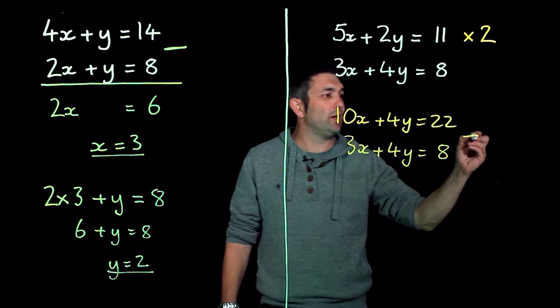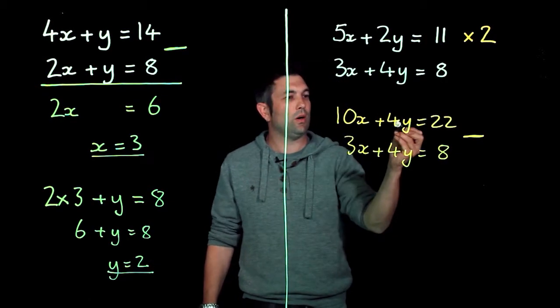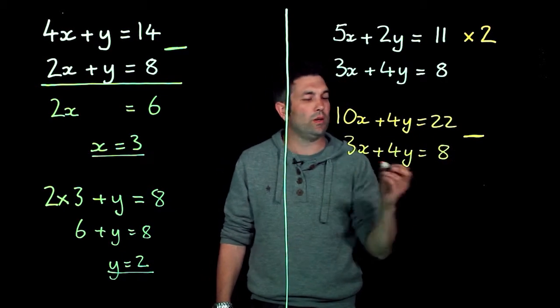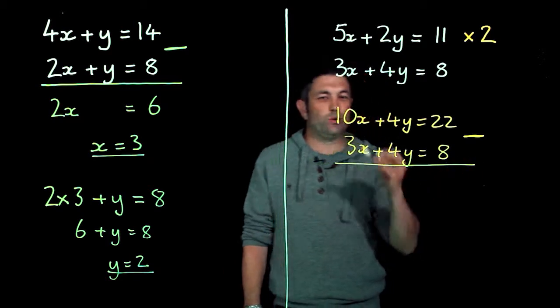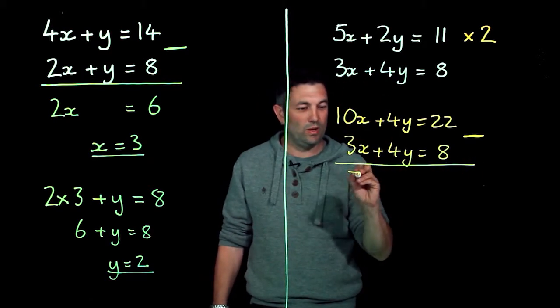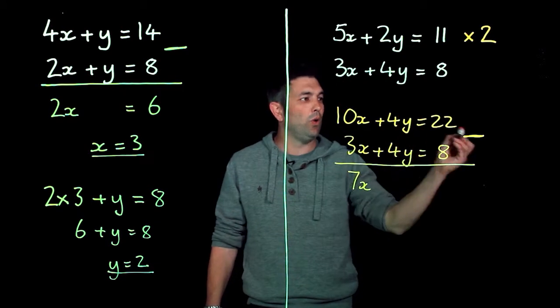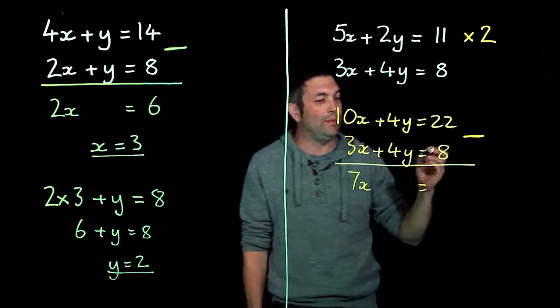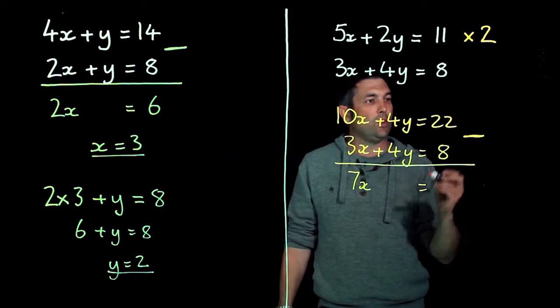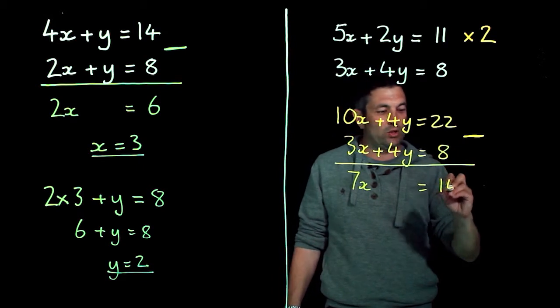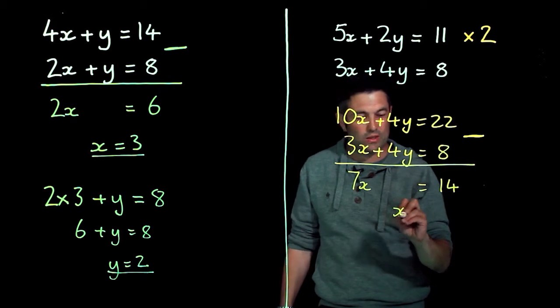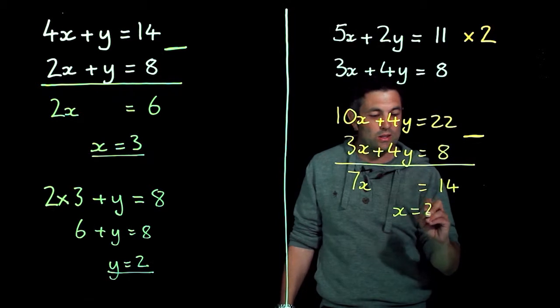Now once again I'm going to take away. You'll notice that I've got plus 4y and plus 4y, so I need to find the difference between them. 10x minus 3x gives me 7x's. 4y minus 4y gives me no y's, which is excellent, I've eliminated the y's. 22 minus 8 gives me 14, so therefore 7x's are 14, 1x is 2.